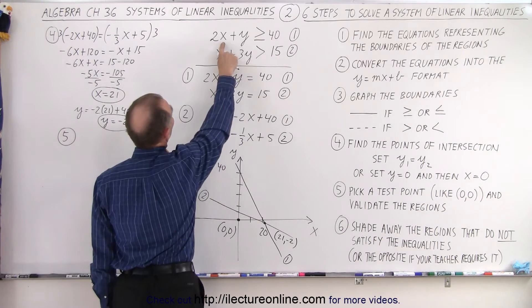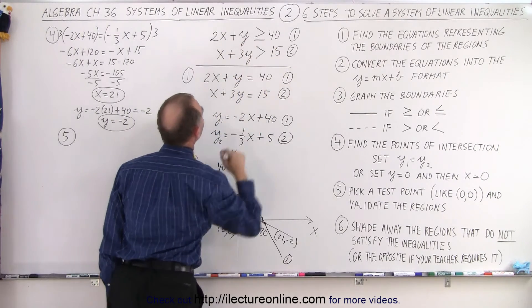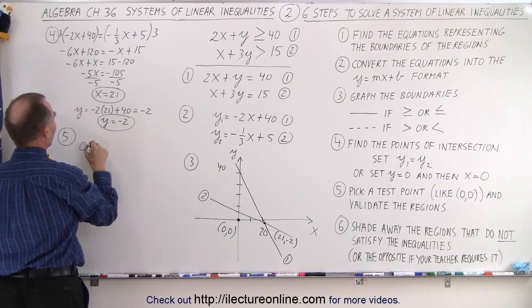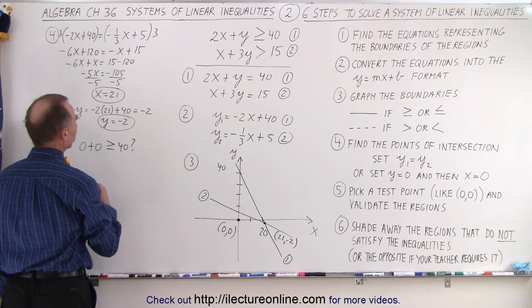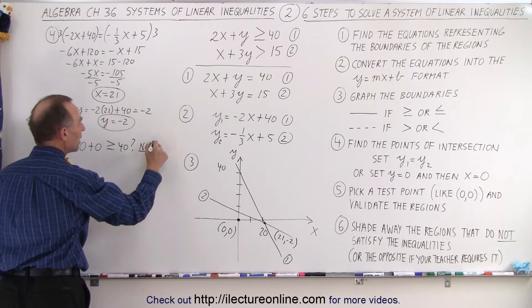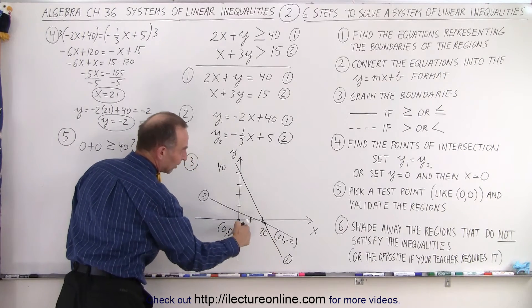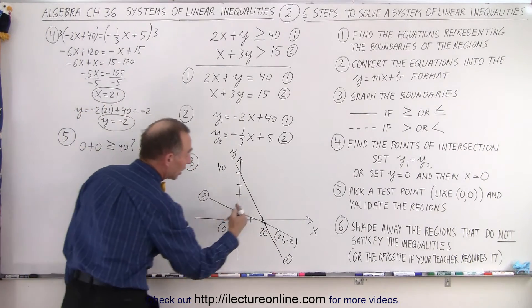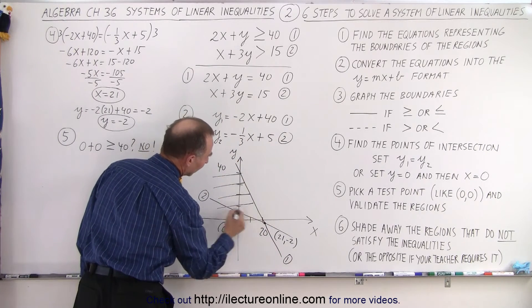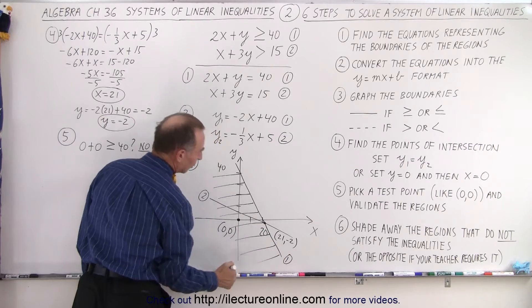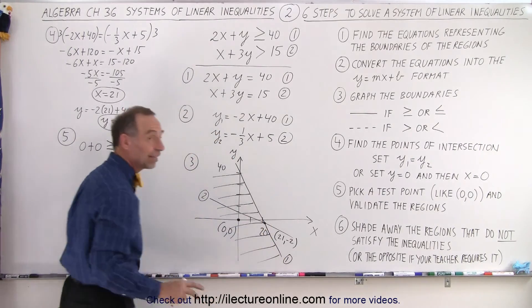So we'll plug in 0,0 for the first equation. Is 0 greater than negative 40? So essentially, we end up with 0 plus 0 greater than or equal to 40 question mark, and of course the answer is no. Which means we picked a point relative to line number one that is not in the region that satisfies the inequality. It's the other side that does, so we're going to get rid of the side that does not satisfy the inequality. So we've gotten rid of two of the four regions. We still have two regions left that could satisfy.